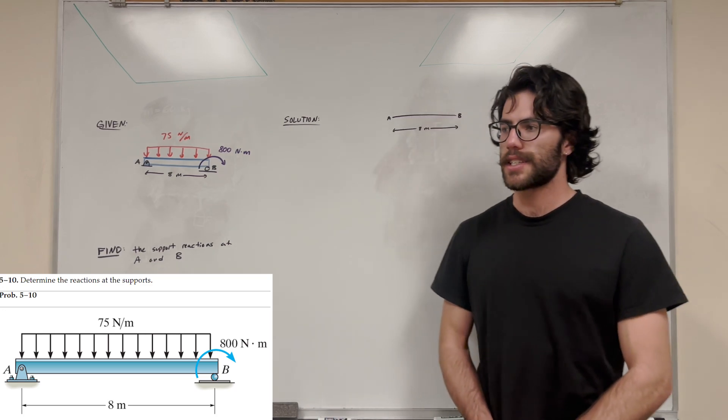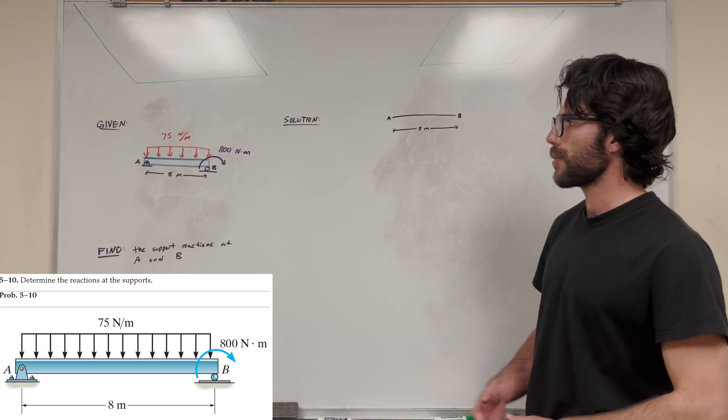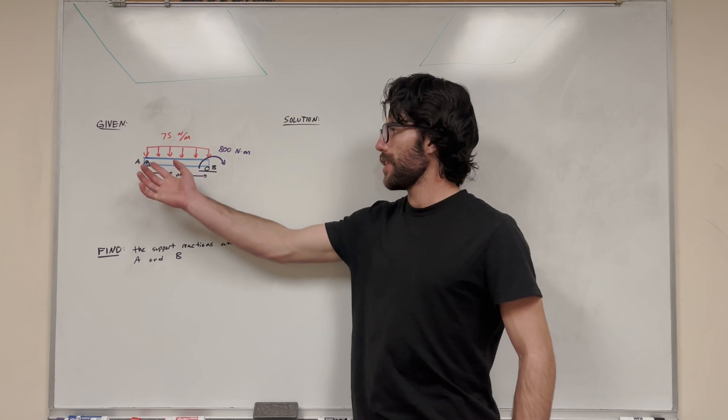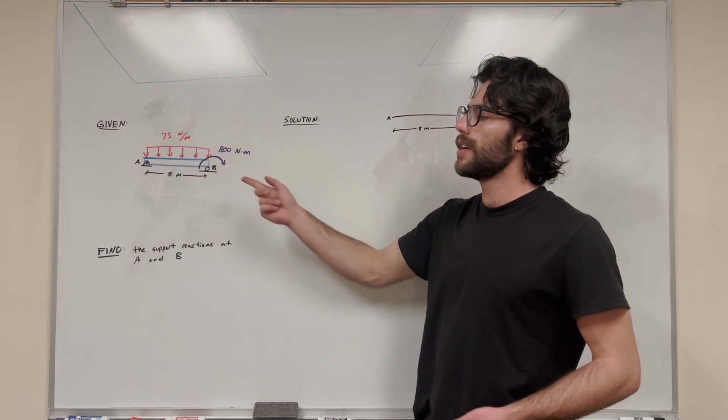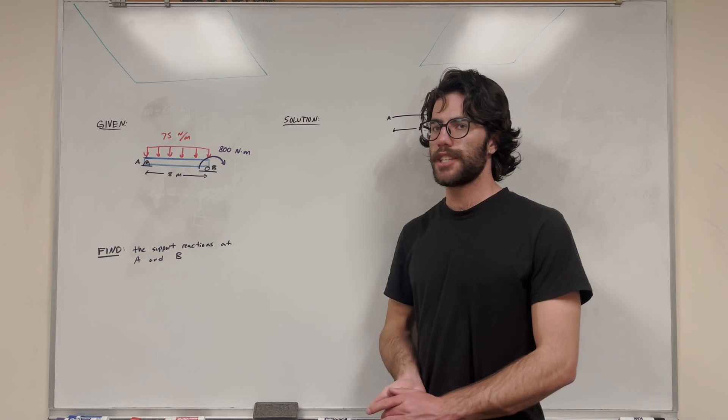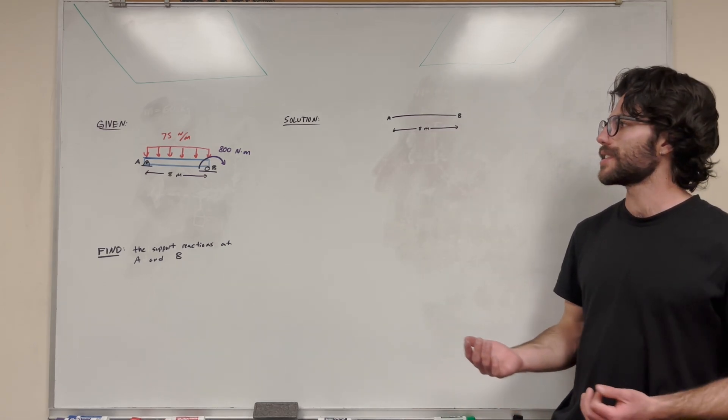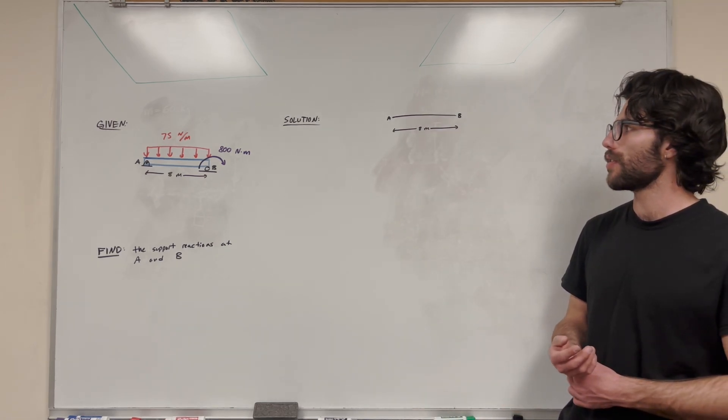What's up, Cal gang? Welcome back to Stacks. So we've got this chapter 5 problem here. We're given this beam here. It's 8 meters long. It's got a distributed load and it's got a moment being applied at B. And our goal is to find the support reactions at A and B. So there's going to be a lot of problems like this. So this is a pretty important problem to be able to solve.